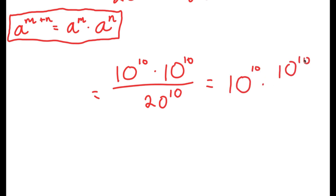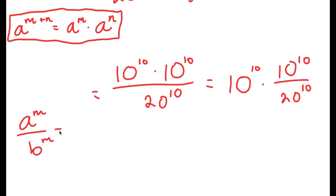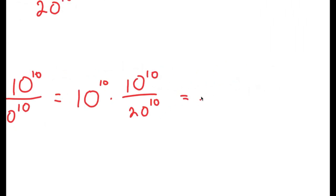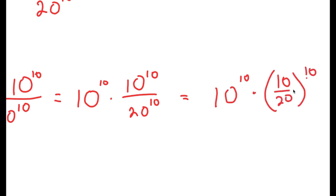So I have 10 to the power of 10 times 10 to the power of 10 over 20 to the power of 10. I grouped 10 to the power of 10 over 20 to the power of 10 so I can use the property a to the power of m over b to the power of m equals a over b to the power of m. This turns into 10 to the power of 10 times one half to the power of 10.